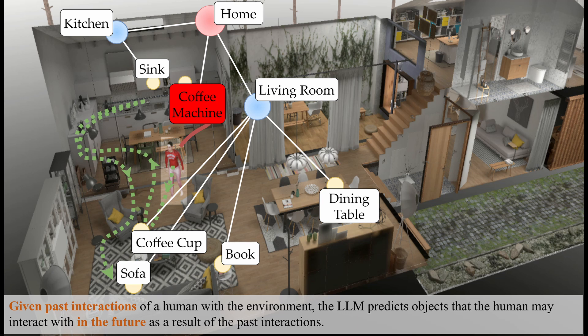Given past interactions of a human with the environment, the LLM predicts objects that the human may interact with in the future as a result of the past interactions.